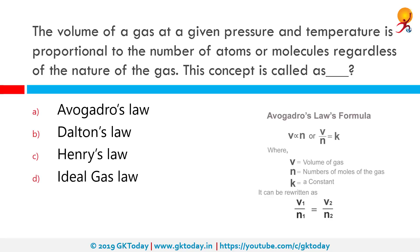The volume of a gas at a given pressure and temperature is proportional to the number of atoms or molecules, regardless of the nature of the gas. What is this concept called? It's called Avogadro's Law. Similarly, Dalton's Law states that in a mixture of non-reacting gases, the total pressure exerted is equal to the sum of the partial pressures of the individual gases. Henry's Law states that the amount of dissolved gas in a liquid is proportional to its partial pressure above the liquid. And the ideal gas law is the equation of state of a hypothetical ideal gas.